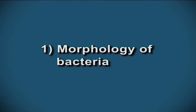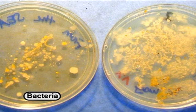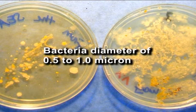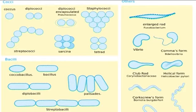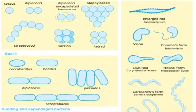First, we will know about morphology of bacteria. Bacteria are very small creatures and cannot be seen with the naked eye. Bacteria have a diameter of 0.5 to 1 micron and are the simplest of prokaryotes. Bacteria can survive extreme conditions of pH, temperature, oxygen tension, atmospheric pressure, and osmotic conditions. Bacteria can be found everywhere in this universe.